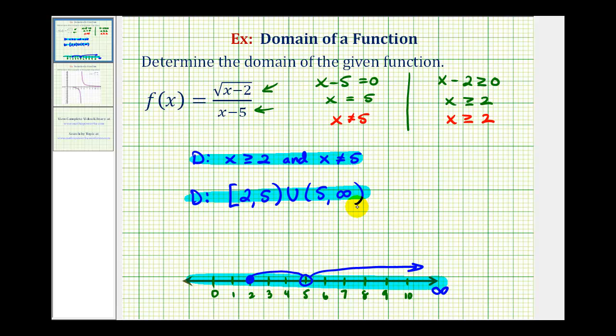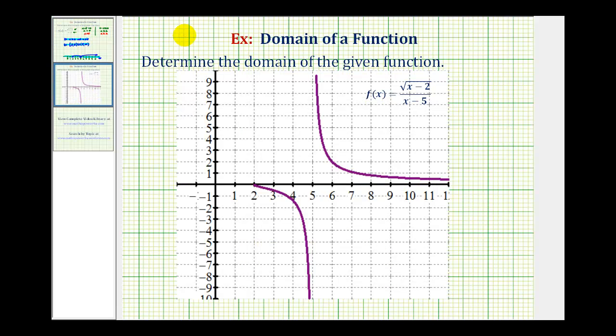As a last check for the domain, it's often helpful to graph the function and project the function onto the x-axis. So here's the graph of our function. If we were to project this down onto the x-axis, we could think of it as making a shadow on the x-axis. Notice how the graph starts at positive two. There's a break at positive five, but it is continuous between two and five, and then to the right of positive five, it's continuous. Verifying our domain is correct.